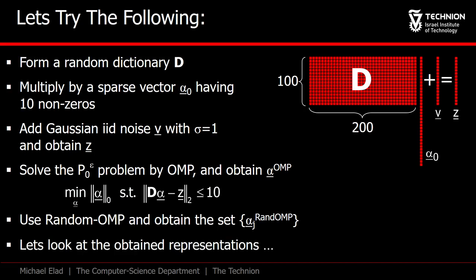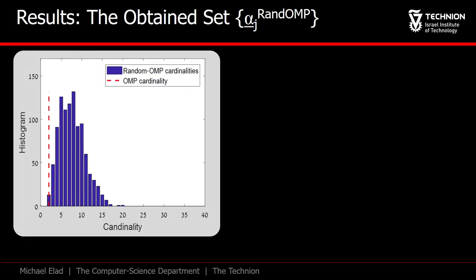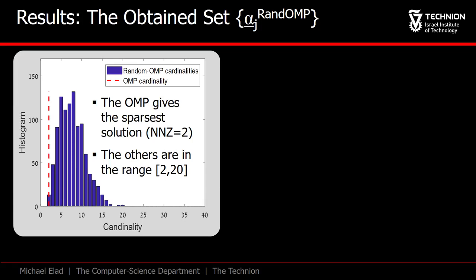Let's have a look at the solutions we got. How sparse are the solutions the random OMP provided? This graph shows the histogram of their cardinalities. The number of non-zeros ranges from 2 all the way to 20, and indeed, all are relatively sparse when compared to the signal dimension 100. By the way, the OMP gave the sparsest solution with two non-zeros.